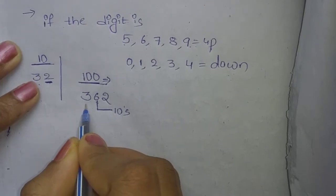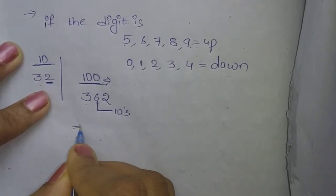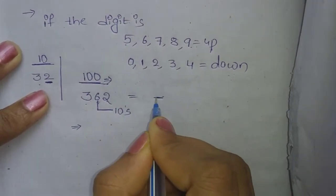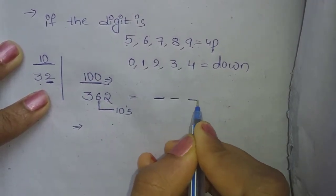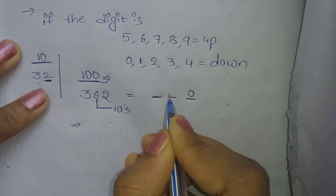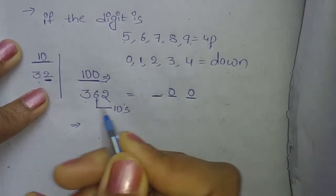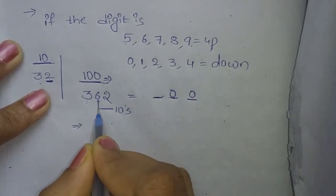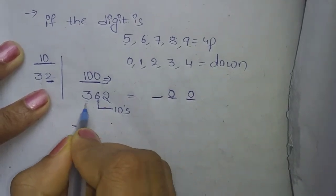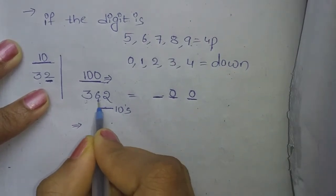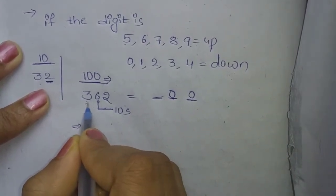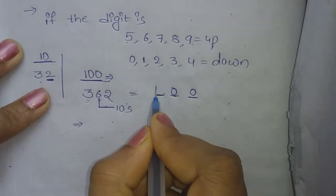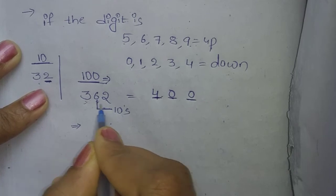Since 6 means round up, we add 1 to the hundreds place. The tens place becomes 0 and the ones place is 0. In the hundreds place there is 3, and the tens place is 4. So the answer, rounded to the nearest 100, is 400.